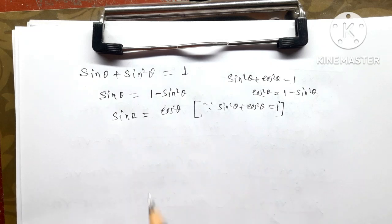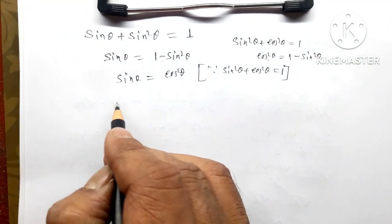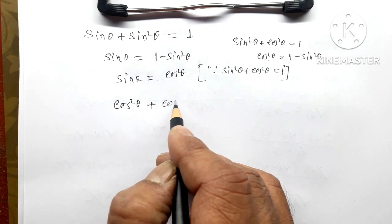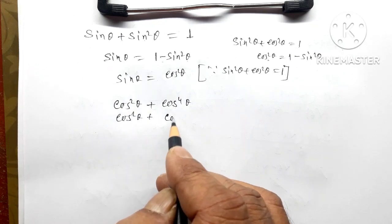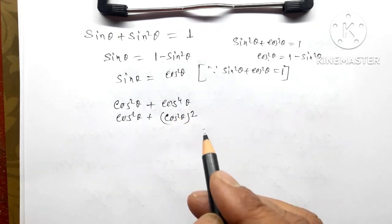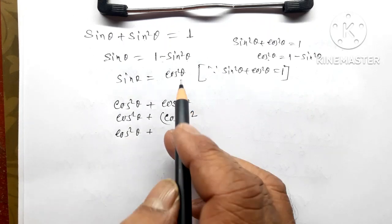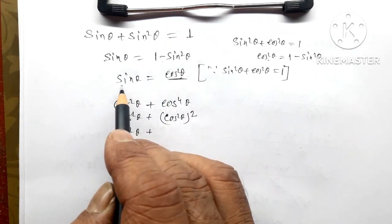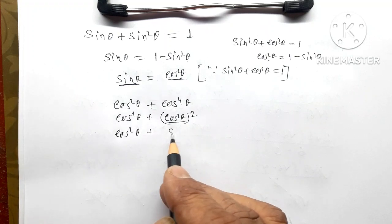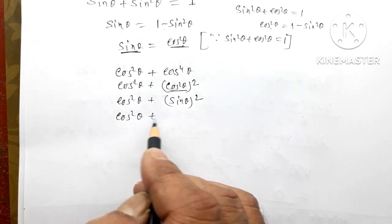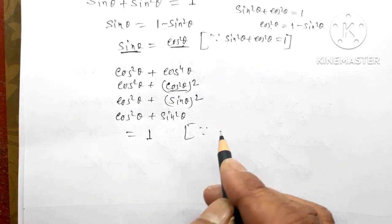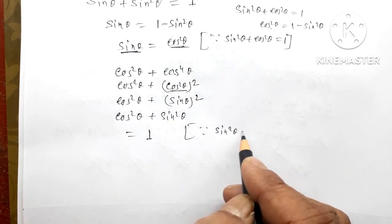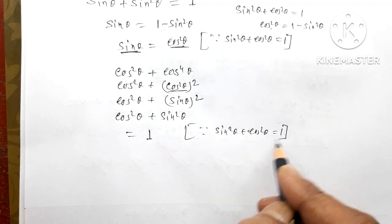So sin theta 2, cos square theta. We also have the same three-dimensional method. cos square theta plus cos square theta. So cos square theta 1, cos square theta whole square. So cos square theta. This is cos2θ. cos2θ, cos2θ, sinθ, it is whole squared. cos2θ plus sin2θ, sin1. The current means sin2θ plus cos3θ. This was 1 and 8.